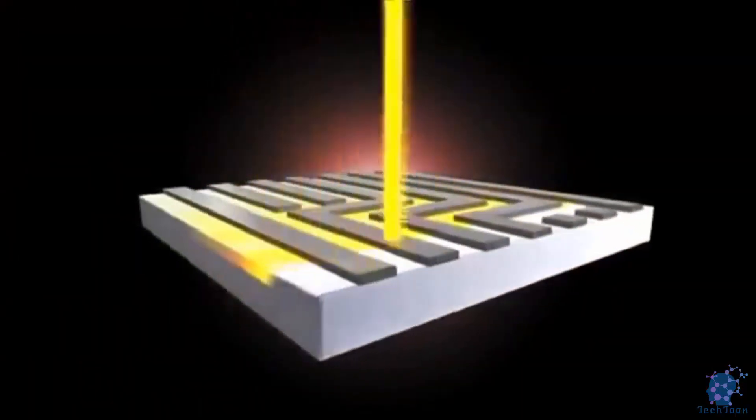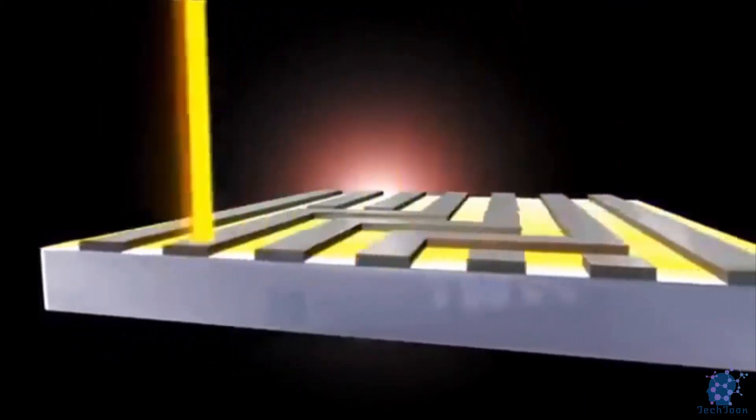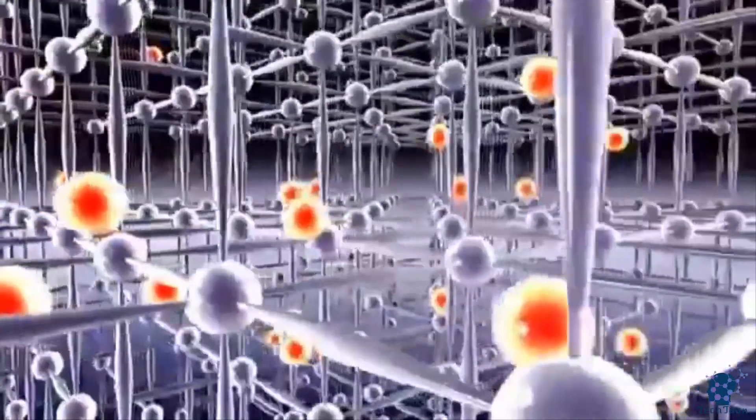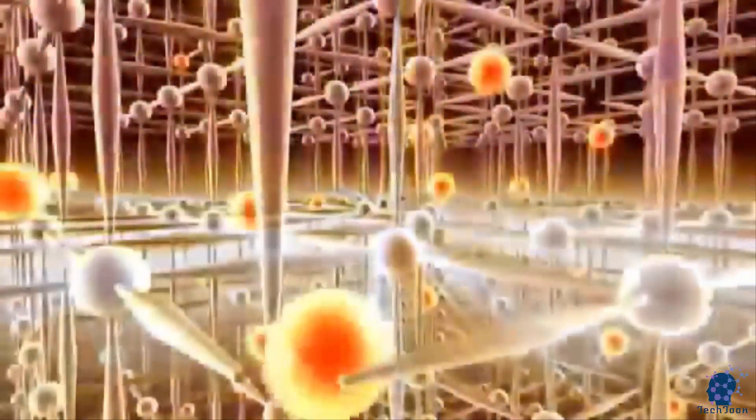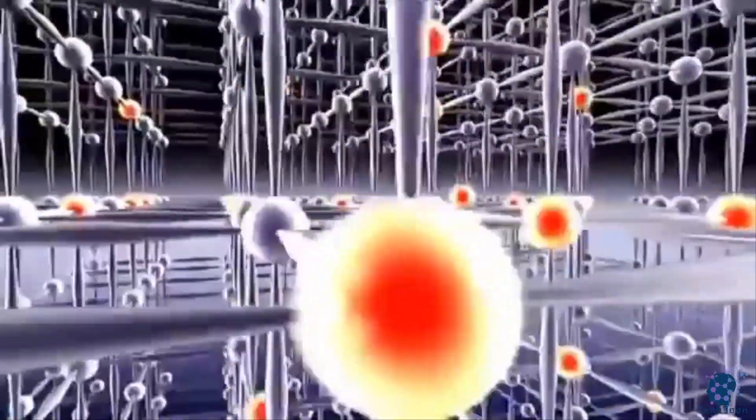First, dopant atoms are injected into the silicon structures. These atoms then distribute randomly in the silicon lattice. At high temperatures, the doping atoms become flexible and take on a fixed position in the atomic structure.